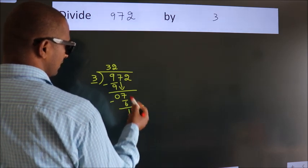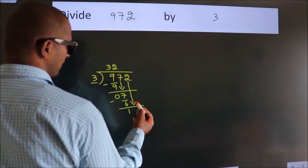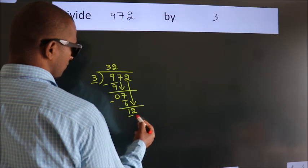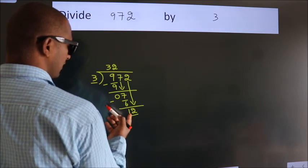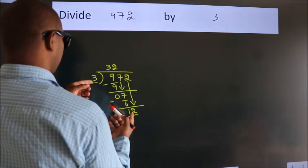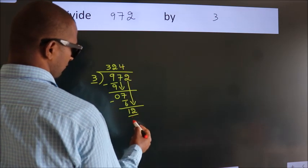After this, bring down the beside number. So 2 down. 12. When do we get 12 in the 3 table? 3 times 4 is 12.